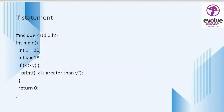Here we can see an example program. There are two variables, x and y. x is assigned the value 20 and y is assigned the value 18. The condition given with the if statement is x greater than y. Inside the if statement there is a print function for 'x is greater than y'. Since x is 20 and y is 18, the condition is true, and the code inside the if statement is executed, printing the output: x is greater than y.